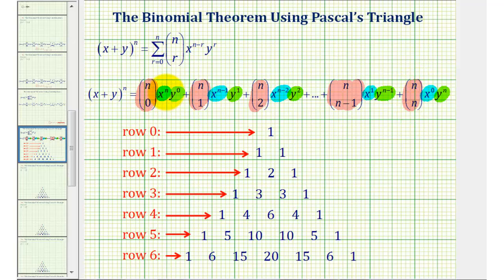The first term has a factor of x to the power of n, where n is the original exponent, and zero factors of y. In successive terms, we start losing factors of x and picking up factors of y. The next term is x to the power of n minus one, y to the first. The next term is x to the power of n minus two times y to the second. This pattern continues until the last term where we have x to the zero, y to the power of n.